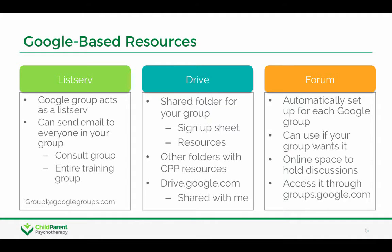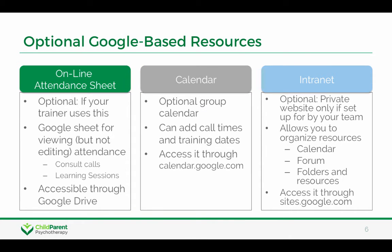Typically there's a forum that is automatically set up for each Google Group, and your group can choose whether or not you want to use the forum. Some other optional Google-based resources that your trainer may use include an online attendance sheet — they'll let you know if they're doing that — a Google Calendar, and an intranet. This is a new thing that we're trying to develop for trainings as a way to organize resources.